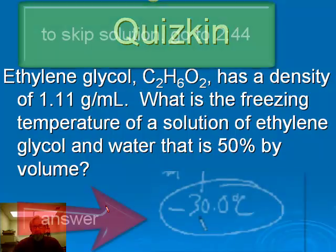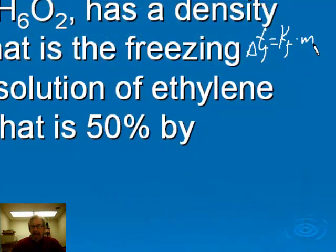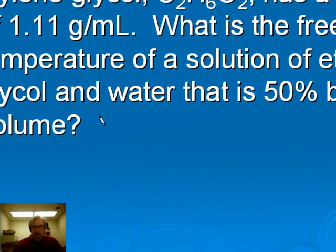The freezing temperature is going to be determined by ΔTf equals Kf times molality. Our concentration unit is percent by volume, but we need to change it into molality to solve this problem. Let's start by thinking about our solution as having two liters, one liter of each. That's 50% by volume.